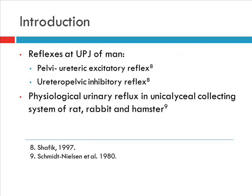The role of the ureteropelvic junction has been quite contentious. There is no consensus as to whether it is truly a sphincter and what its role is. Several physiological studies have been carried out. Shafiq elucidated the role of the PUJ in control of urine flow from the renal pelvis into the ureter, and came up with two mechanisms: the pelvic ureteric inhibitory reflex and the ureteropelvic excitatory reflex. These reflexes control the flow of urine from the renal pelvis into the ureter and prevent backflow of urine from the ureter into the pelvis, which is protective.